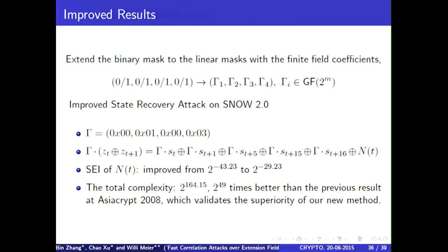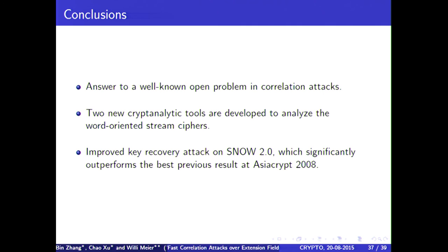Interestingly, if you look at non-binary masks, then the results are getting even better. I won't go into detail here, but we see that the squared Euclidean imbalance increases a lot. This gives a decrease in total complexity. The resulting complexity is 2^164, which is almost 2^50 times better than the previous result. I come to conclusions. I think we answer a well-known open problem in correlation attacks. We have developed two new cryptanalytic tools to analyze the word-oriented stream ciphers. And we come up as an application with an improved key recovery attack on SNOW 2.